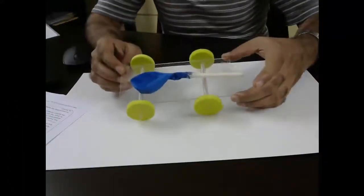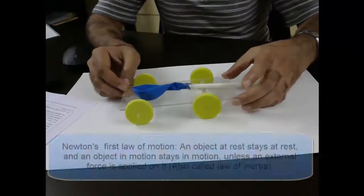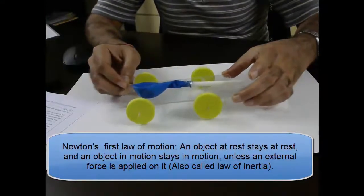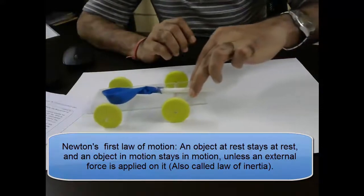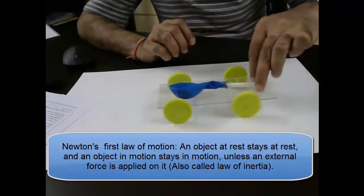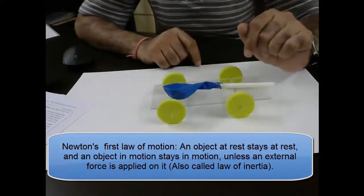Now let's look at the first law of motion. It says that an object at rest stays at rest and an object in motion stays in motion unless an external force is applied on it.